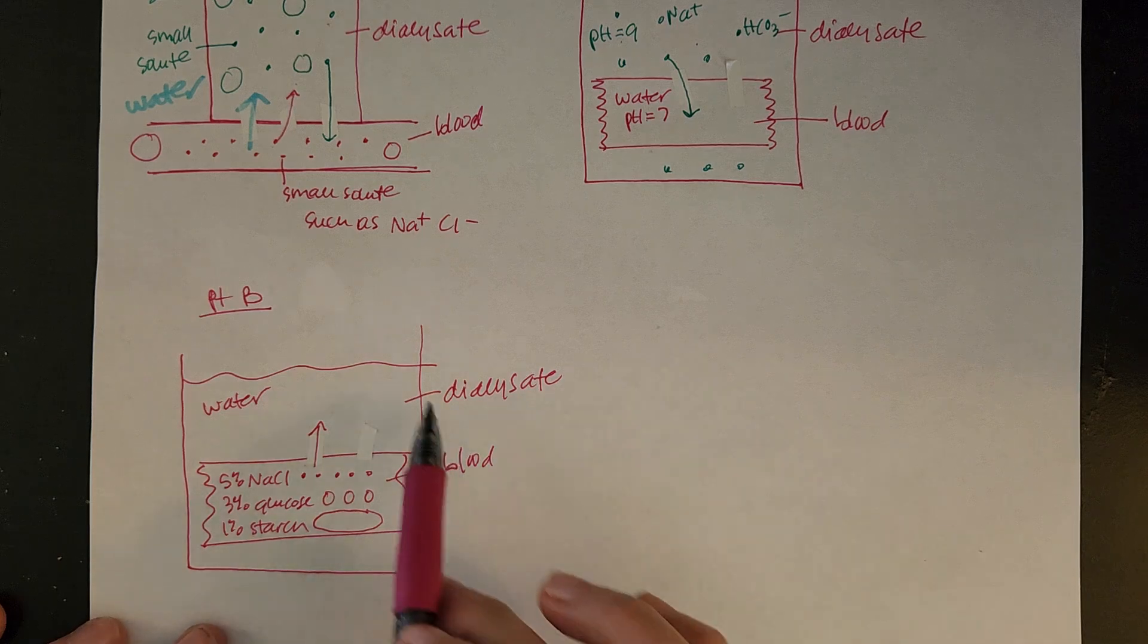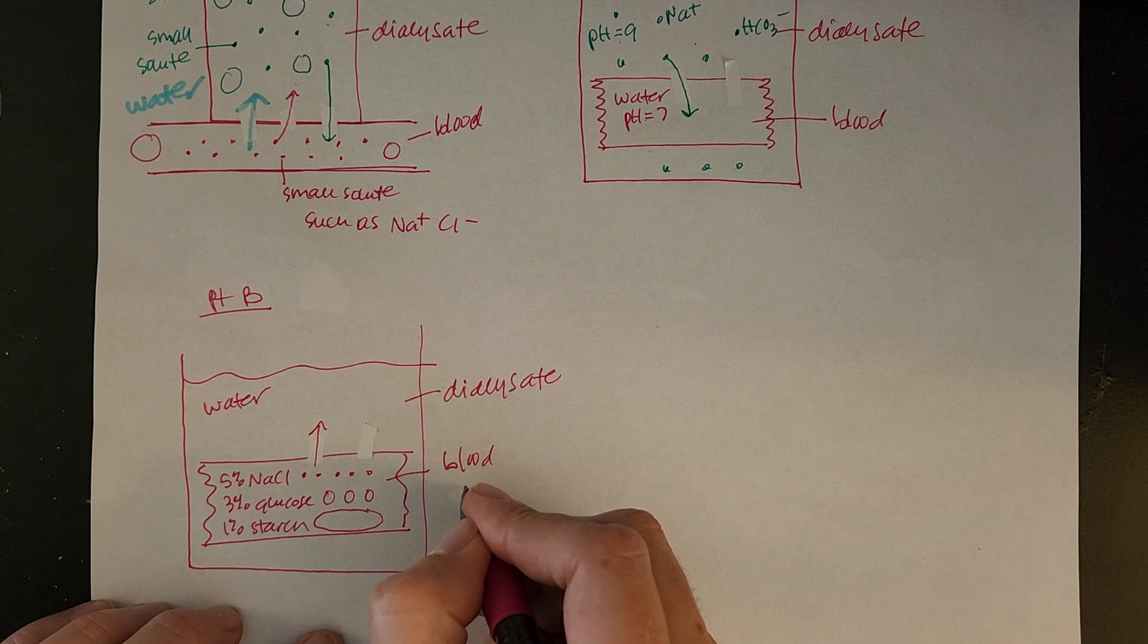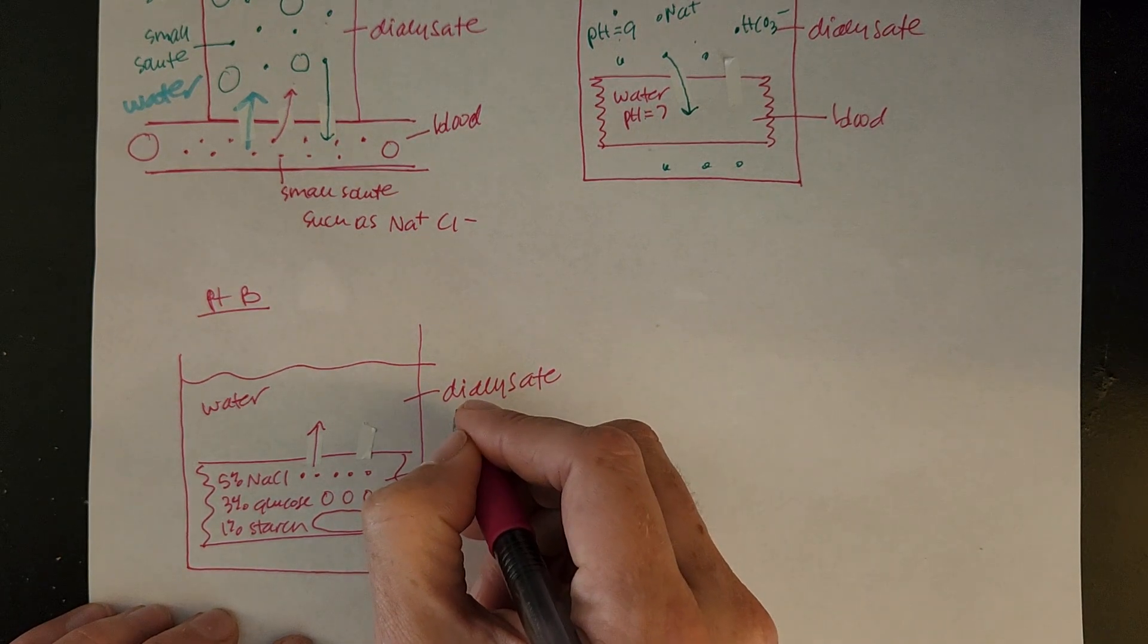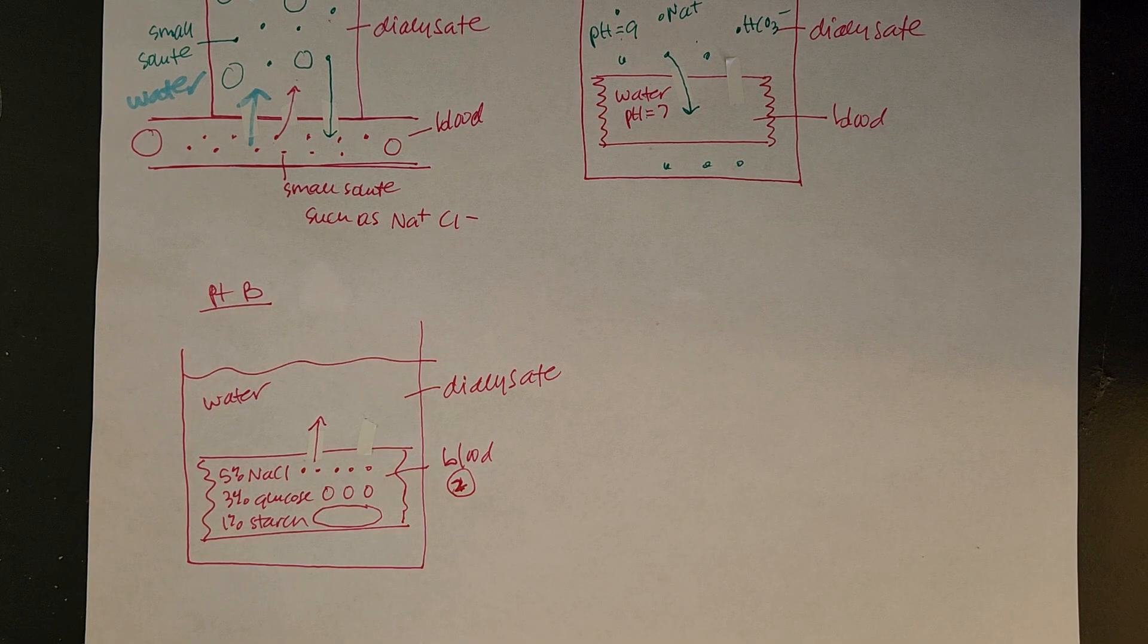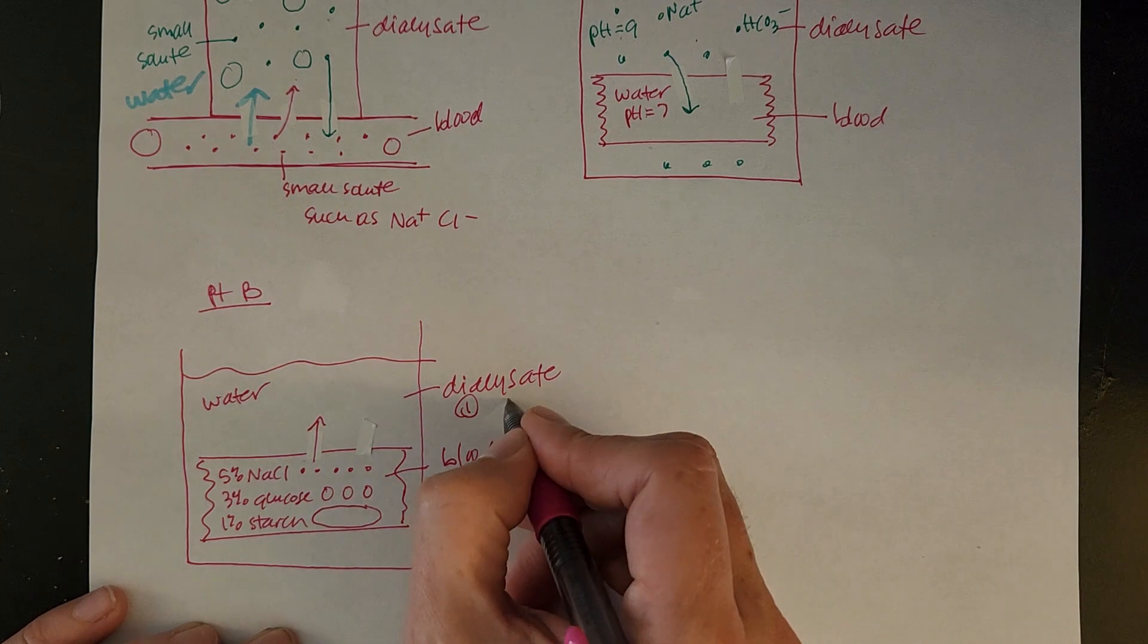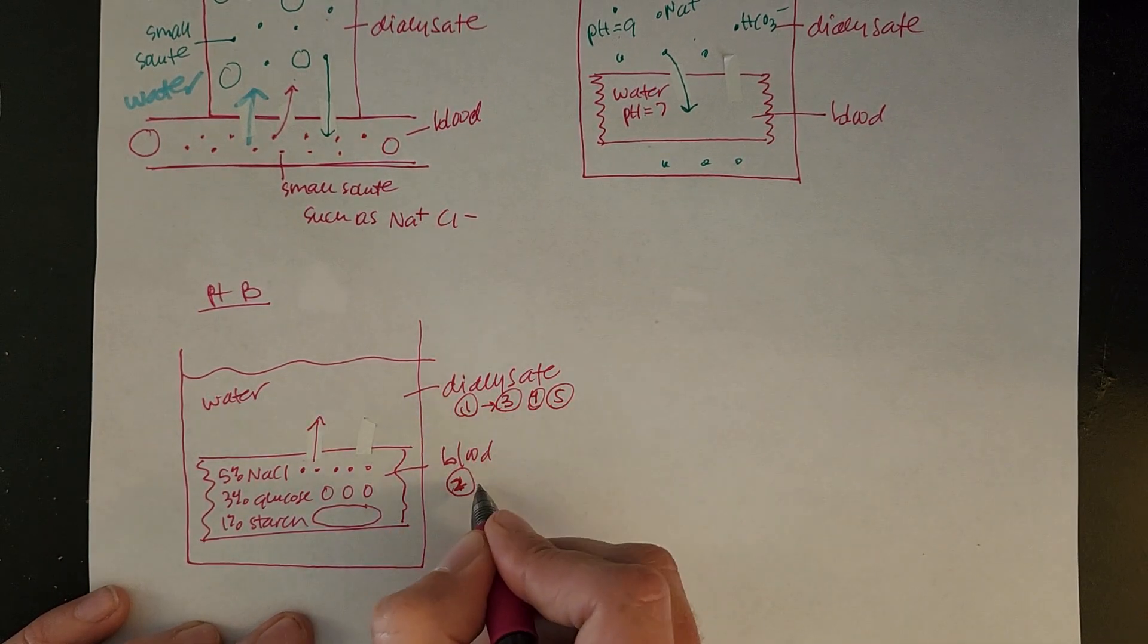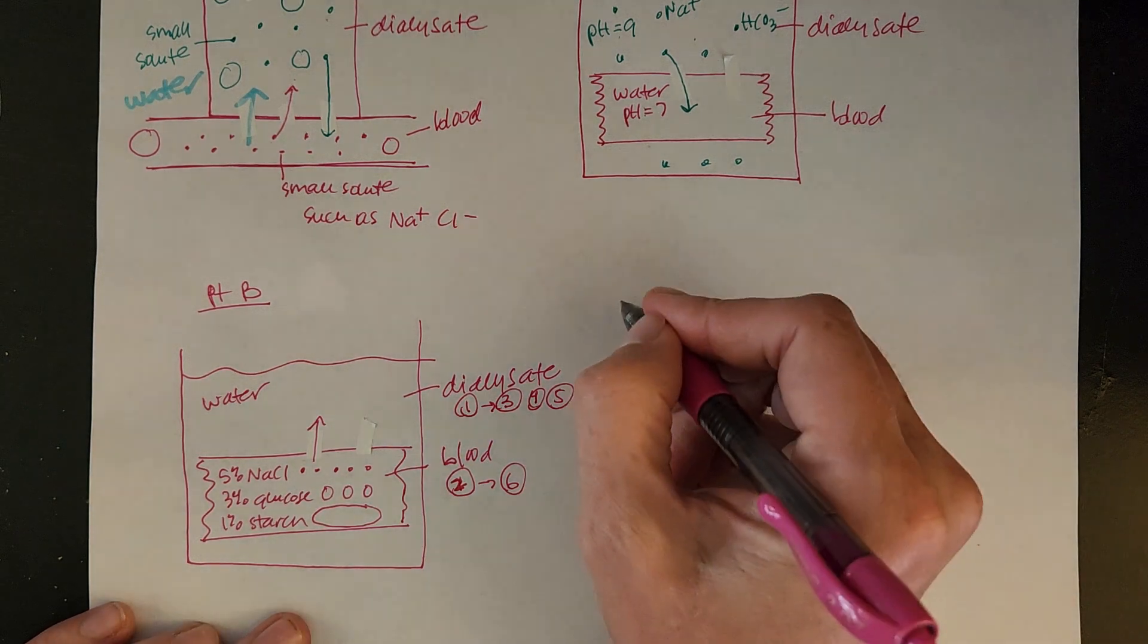So that will be part B. And during part B, what you're going to do is you're going to be collecting some test tubes. Okay? So test tube 1 will have a little bit of this initial blood in it. And then over the course of time, actually, sorry, test tube 2 will have some blood in it. Test tube 1 will initially just be water. And then over the course of time, we're going to take a little bit of this dialysate out. So that will be test tubes 3, 4, and 5. And then at the end, we will also test the blood again. And that will be in test tube 6. So that will be part C.